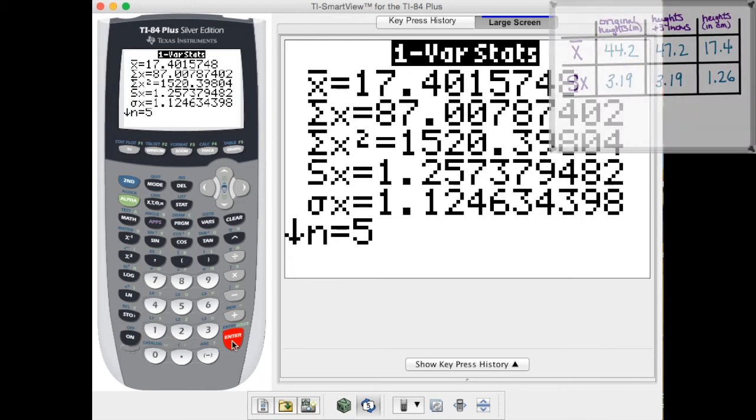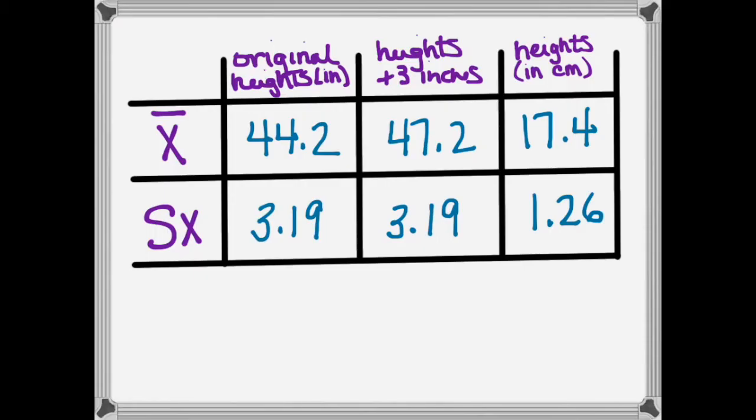We'll hit calculate and now I have a mean of 17.4 and a standard deviation of 1.257. We'll put this information into our table and then see how we could have come up with these values without doing all of this transforming in our lists. Here's the completed table with all the values from my original heights, the heights when we added three inches, and the heights when we divided by 2.54 to turn it into centimeters.